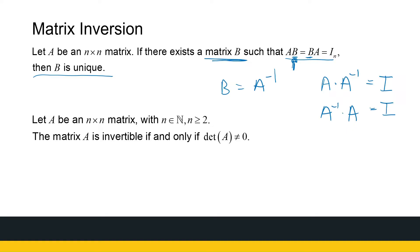Now a very interesting conclusion — which we can't prove with the tools we currently have, we need some elementary matrices and more information — is that matrix A is invertible if and only if the determinant of A is non-zero. You need to look at determinants and make sure you know what they are. If the determinant is zero, then you will not be able to find the inverse of the matrix.